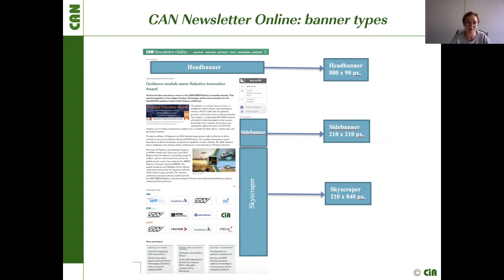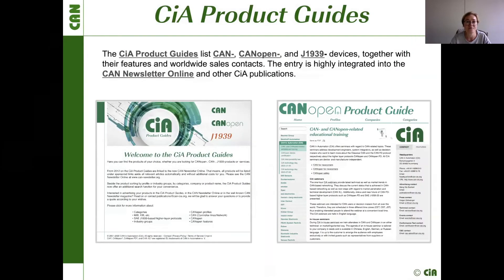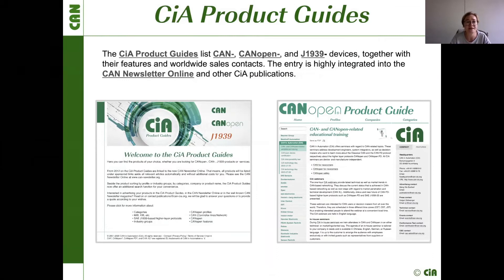We also have so-called product guides — an important publication and guideline for CAN-related products and devices. Our product guide has three categories: CAN, CANopen, and J1939. You can find many different products in these categories, and you can show your own product here as well, with a description, a picture, and sales contacts.